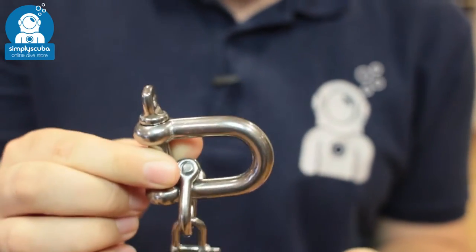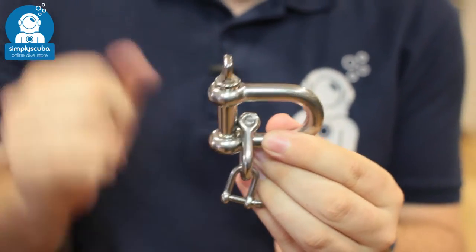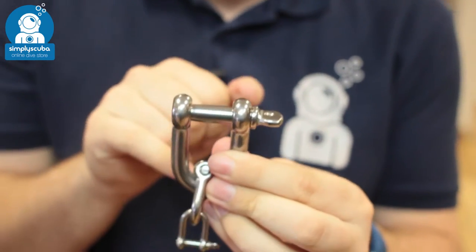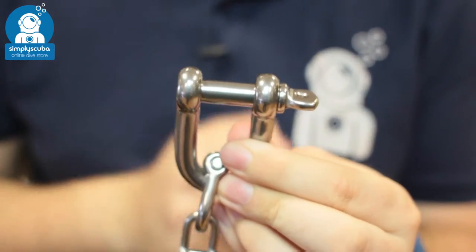These are a semi-permanent link to attach two lines together. You have a screw gate, sort of bar gate in there. Very strong and very reliable.